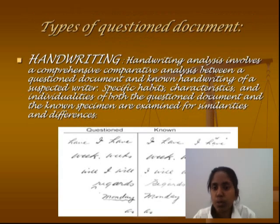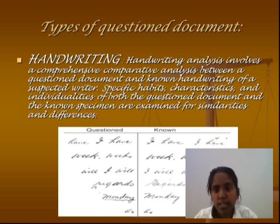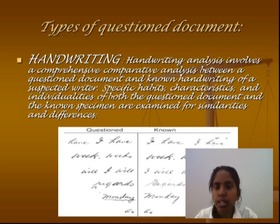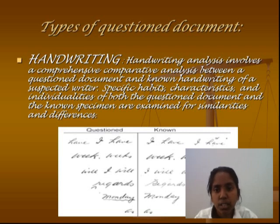The first type of questioned document is handwriting. Handwriting analysis involves a comprehensive comparative analysis between a questioned document and the known handwriting of a suspected writer. Specific habits, characteristics, and individualities of both the questioned document and the known specimen are examined for similarities and differences. In handwriting, we check mostly individual characteristics, class characteristics, and some special habits.